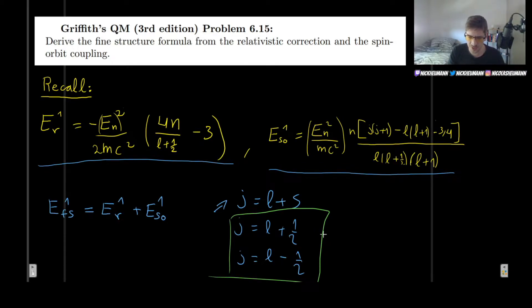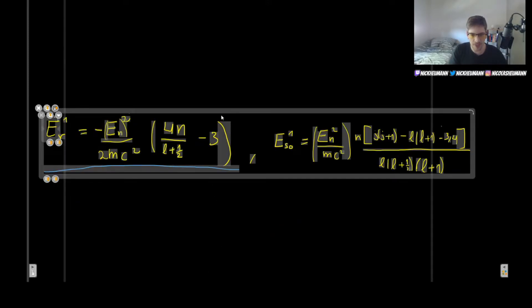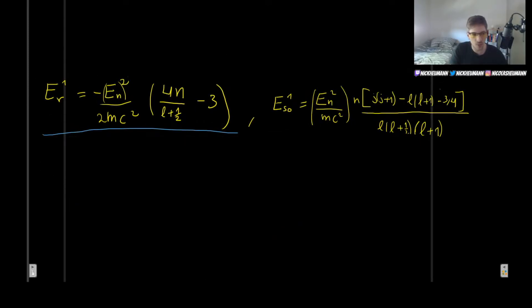I like to go for J equals L plus one-half because I kind of like plus signs more, but it really doesn't matter—the procedure will be literally the same. There's going to be no difference. You will have some numbers that are different in between, but the procedure itself will be the same. And so I will use this first one, and from here, of course, we can see that L will be J minus one-half.